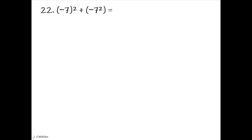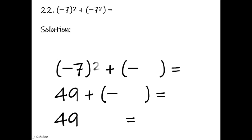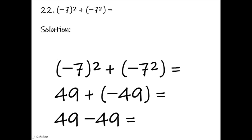Negative 7 to the power of 2, added by minus 7 to the power of 2, equals. Solution. Negative 7 to the power of 2 is 49. 7 to the power of 2 is 49. Positive multiplied by negative 49 is negative 49. 49 minus 49 equals 0.